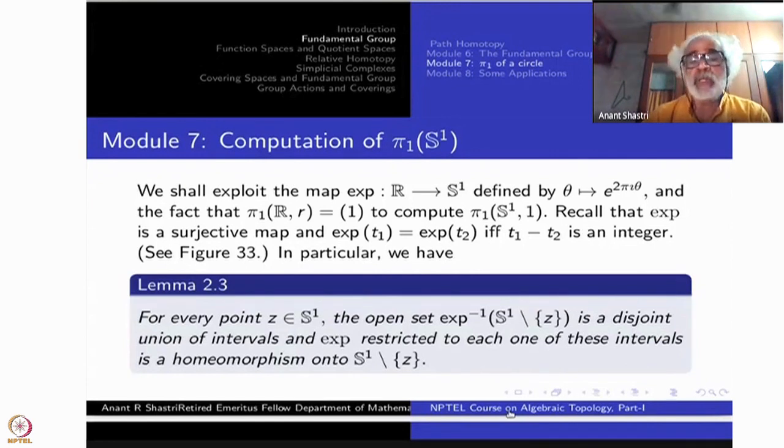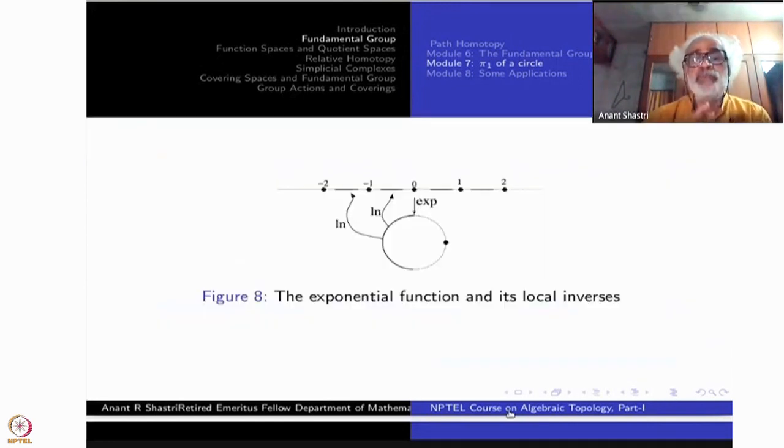So these things I have sketched in this diagram. So all the integers I have put a bullet kind of slightly larger points. 0, 1, 2 here, minus 1, minus 2 here and so on. All of them are going to this bullet here in the circle.